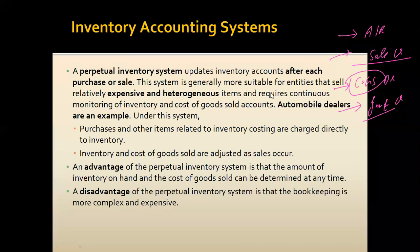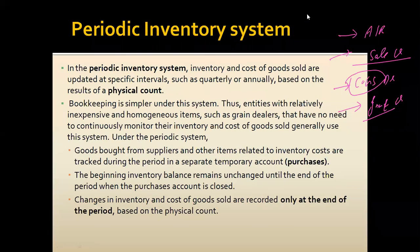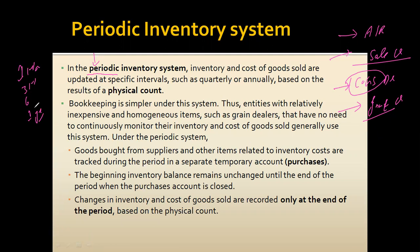That was the perpetual inventory system. Next we have the periodic inventory system. Here we update the stock after a specific period of time, rather than after each issuance and receipt. That period can be one month, three months, six months, or even one year — it depends on the organization's policy.